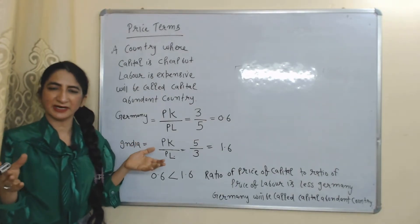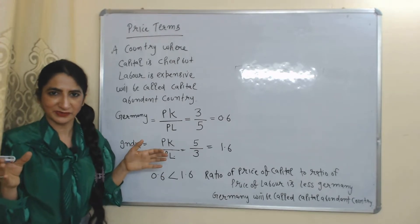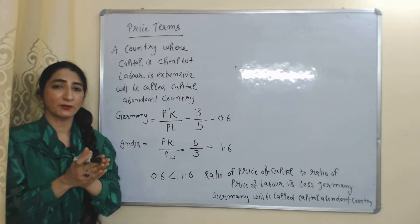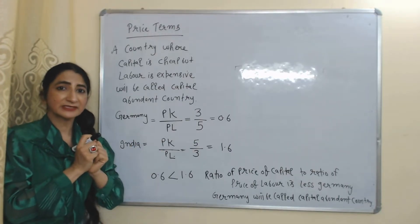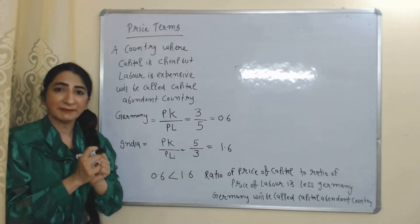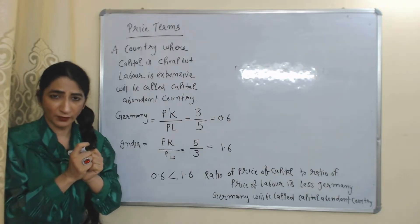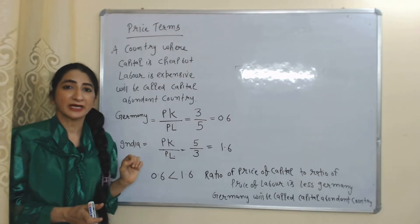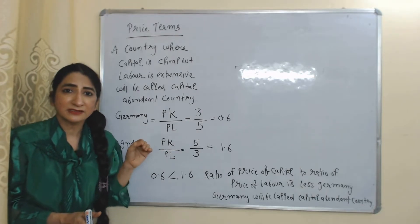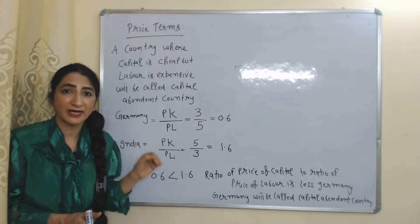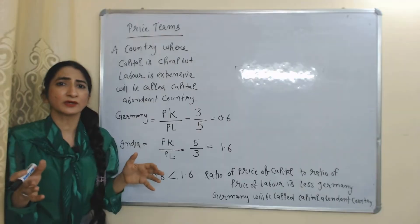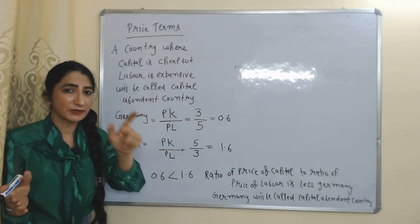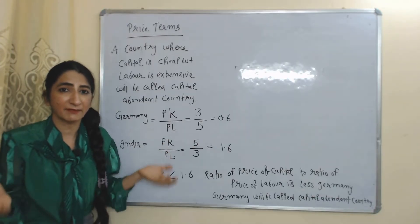We can explain this theory by two terms: physical terms and price terms. First, we will explain this theory in price terms. According to price terms, a country where capital is cheap but labor is expensive will be considered a capital-abundant country. Please listen carefully — according to price terms, a country where the price of capital is very low but the price of labor is very high will be considered a capital-abundant country, because here the price of capital is very low, no matter what quantities of capital or labor they have. We only consider price.